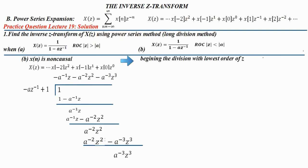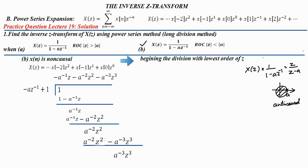Now we will go to the second part of the question. Here it is given modulus of z less than a. Again, X(z) is 1 by 1 minus a z raise to minus 1, which becomes z by z minus a, and the ROC is modulus of z less than a. If modulus of z less than a, it is an anti-causal signal. We cannot use the direct method again, since the question specifies using the power series method, so we need to perform long division. For the anti-causal case, we need to start the division with the lowest order of z.